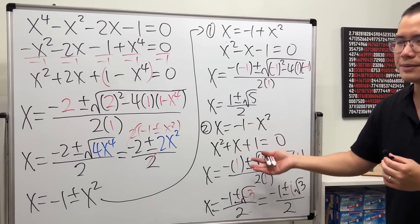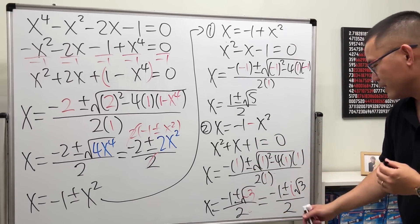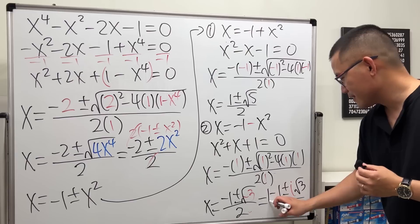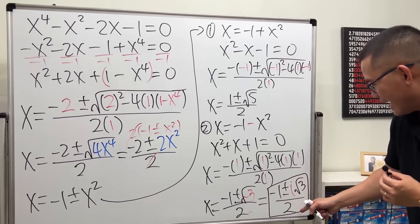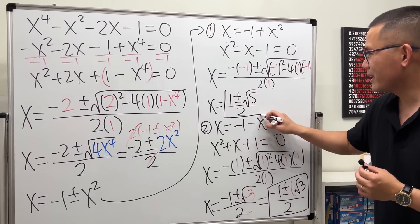In fact, these two are two of the cube roots of unity. It's a solution to x to the third power is equal to 1, but anyway, that's it.